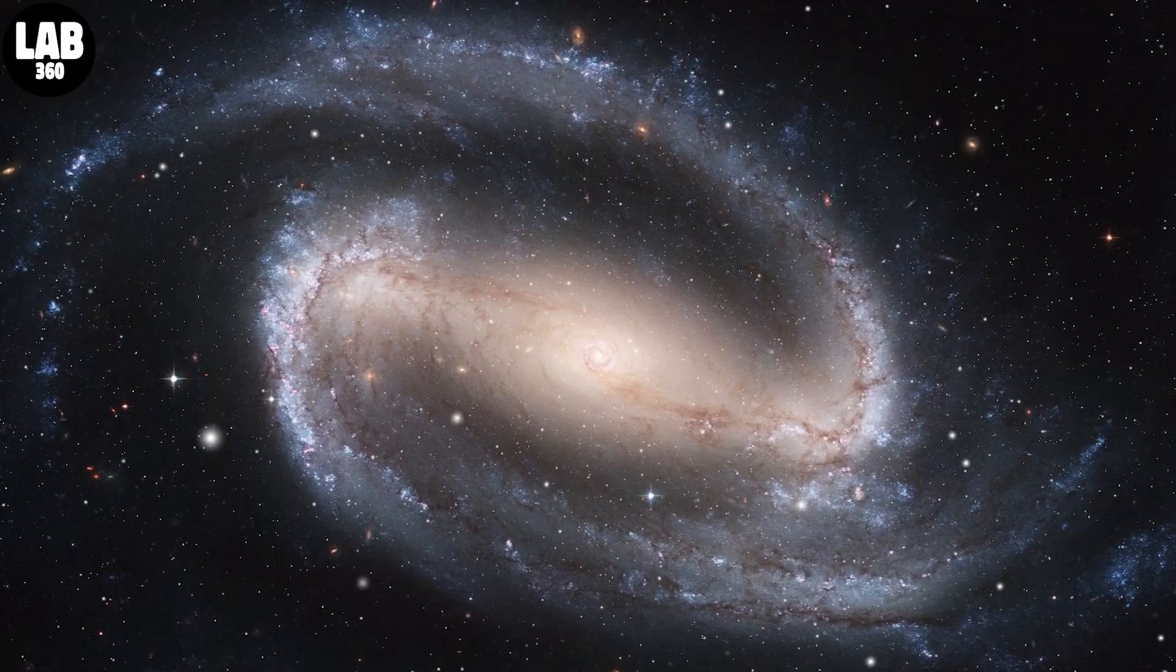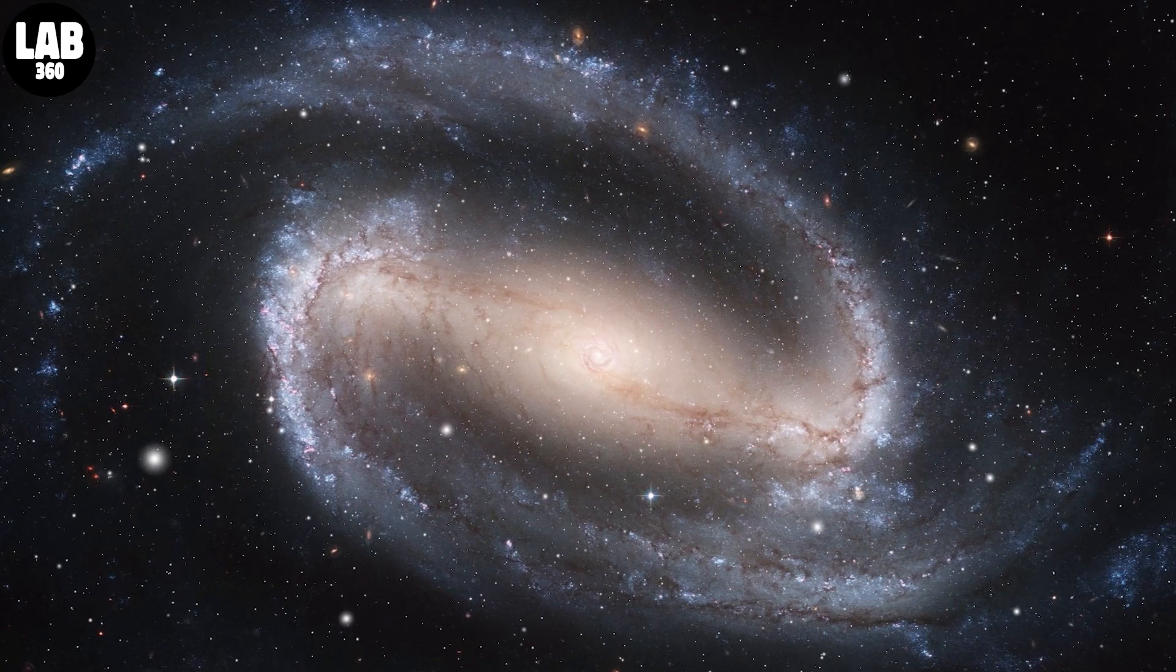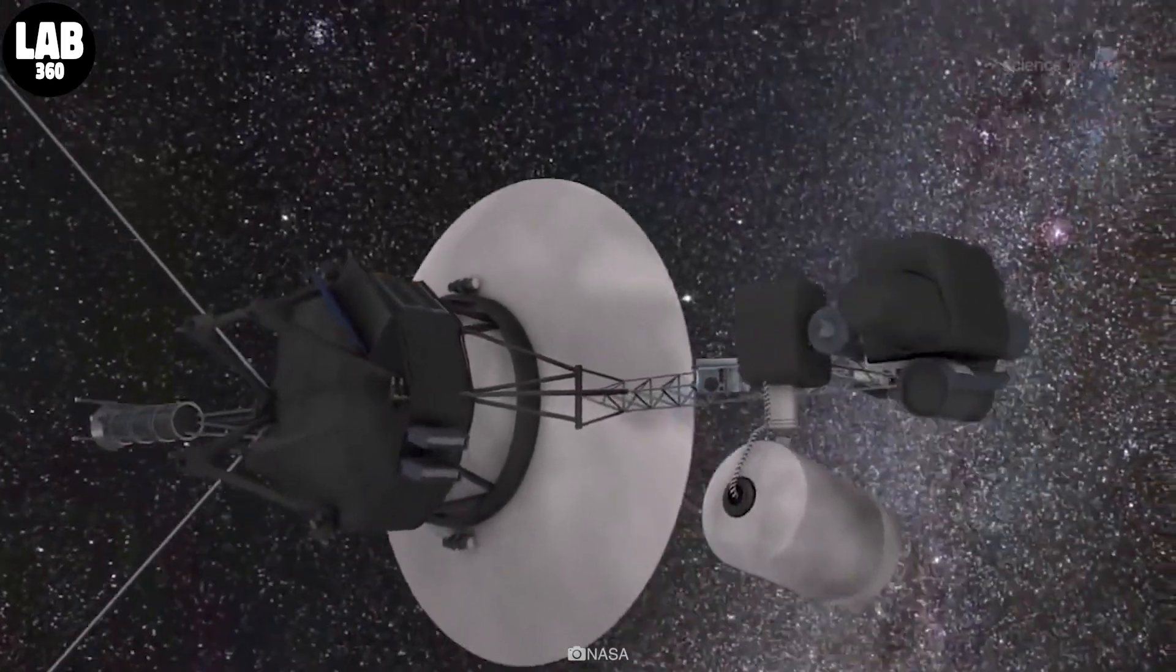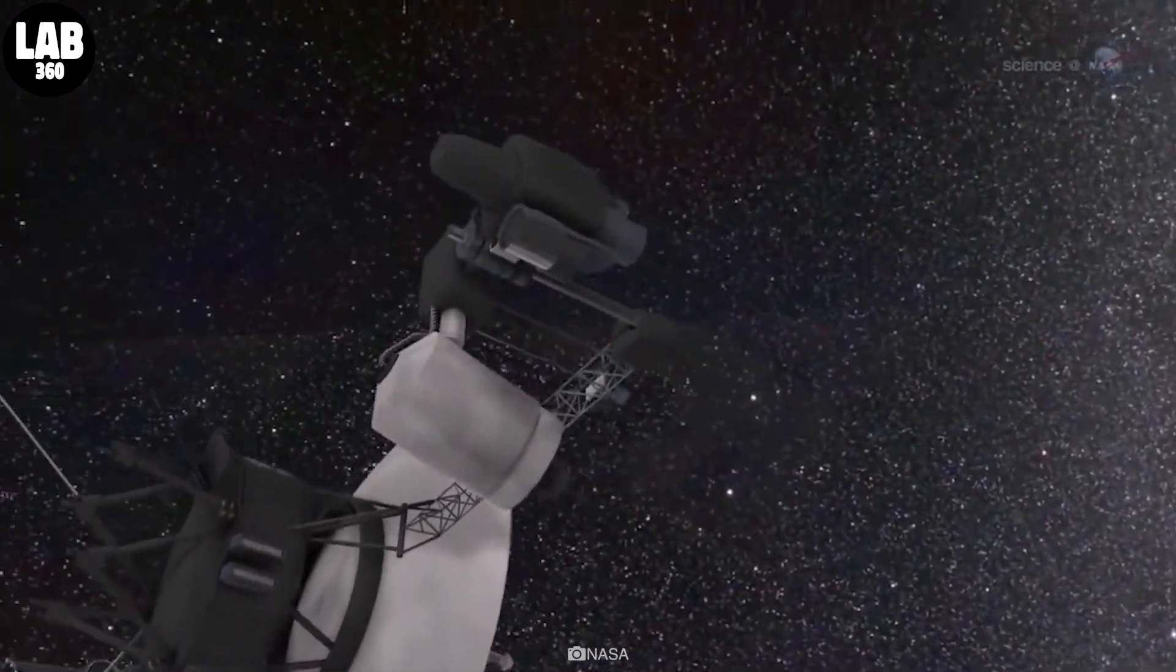But the readouts from the Attitude Articulation and Control System, or AACS, which control the spacecraft's orientation in space, don't match up with what Voyager is actually doing.